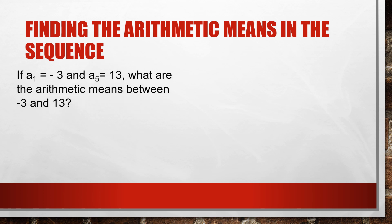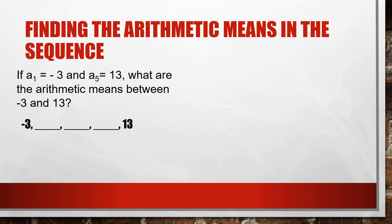Another example: if a sub 1 equals negative 3 and a sub 5 equals 13, what are the arithmetic means between negative 3 and 13? First, express this as a sequence: negative 3, _, _, _, 13. Since there are 5 terms, there are 3 blanks, so we need to find 3 arithmetic means. The first term is negative 3, the last term is 13, and there are 5 terms.